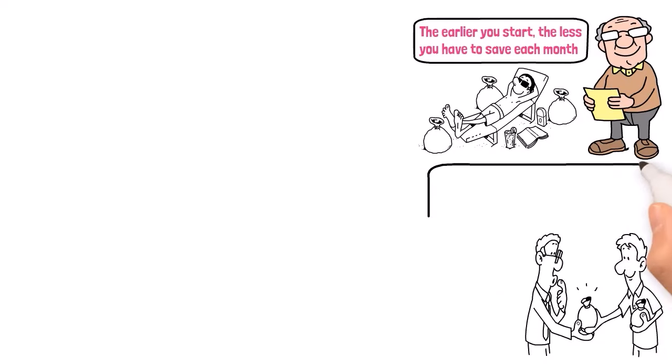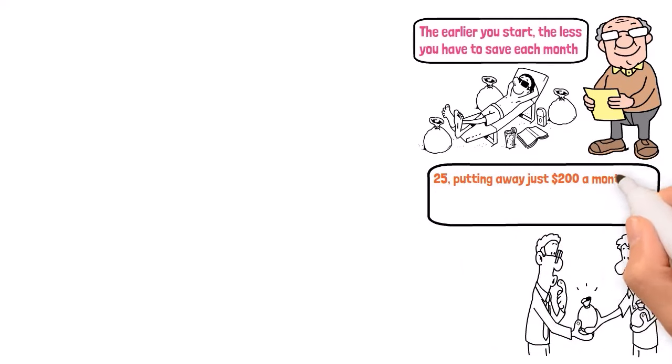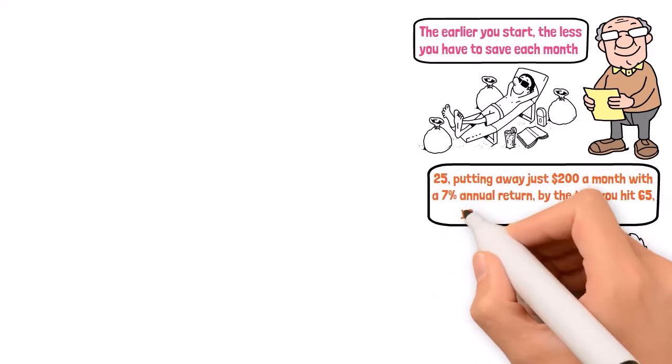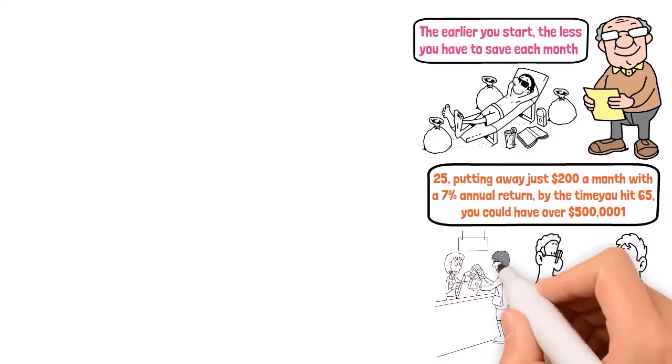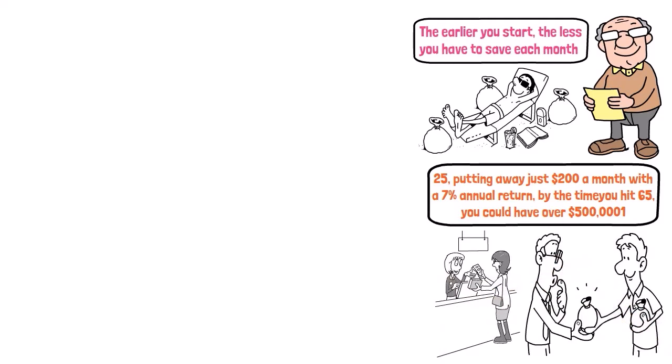So let's break it down with some real numbers. If you start saving at 25, putting away just $200 a month with a 7% annual return, by the time you hit 65, you could have over $500,000. Wait until you're 35 and to reach that same goal, you'll need to save almost double that amount monthly. Time is money, literally.